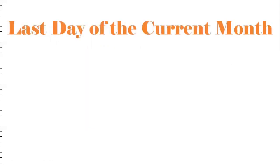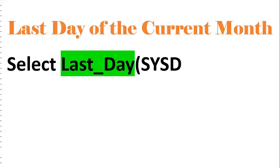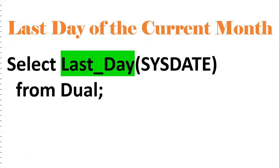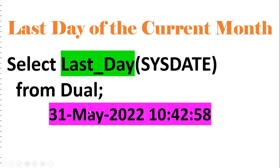One more important question: last day of the current month. In the current month I want to know the last day — that is 31st May 2022. Oracle provides a built-in function called LAST_DAY. By using LAST_DAY(SYSDATE), we can get the last day of the current month, which gives 31st May 2022.